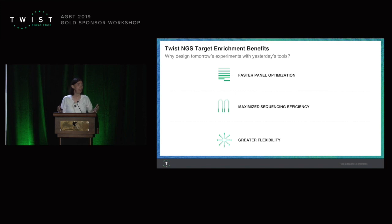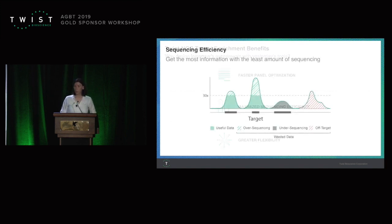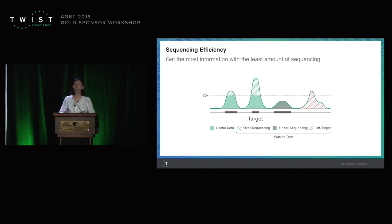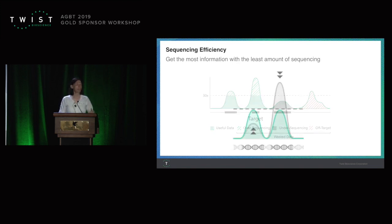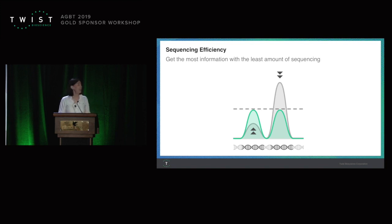We want to give you as great flexibility as possible to really enable any workflow that you want. On sequencing efficiency — this is what we are trying to do. You can see that there is a target region you want to capture, and the goal is to get to 30x coverage with as little sequencing as possible, meaning that we don't want to over-sequence any target because that's just waste of your sequencing data. At the same time, we don't want to under-sequence anything, and we definitely don't want to have any off-target.